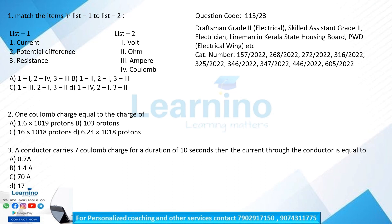This is the correct answer. Current is ampere — 1 is 3, option C. Potential difference is volt — 2 is 1. Resistance is ohm — option C is the correct answer for this unit question.